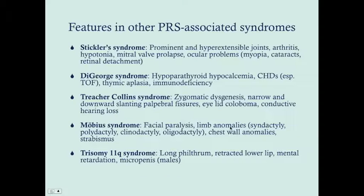Stickler syndrome is the most common PRS-associated syndrome. In this case you have all of the Pierre Robin triad — micrognathia, cleft palate, glossoptosis — but you also have prominent and hyperextensible joints, possible arthritis, hypotonia, mitral valve prolapse, and ocular problems such as myopia, cataracts, and retinal detachment.